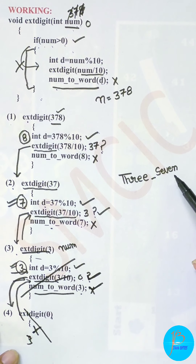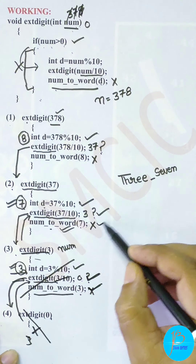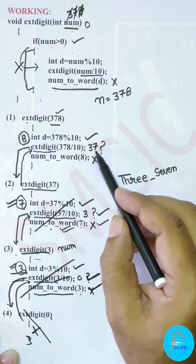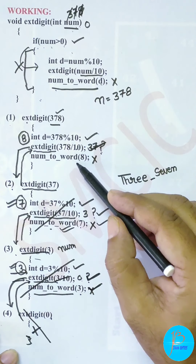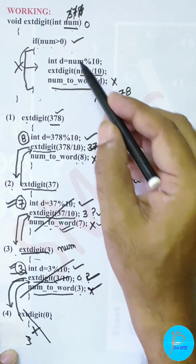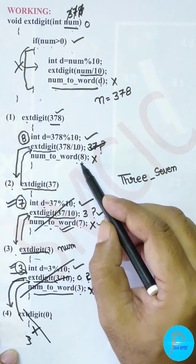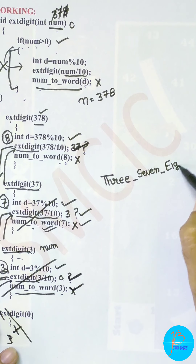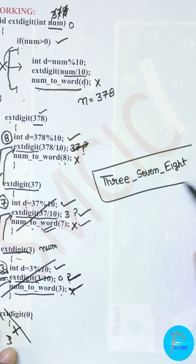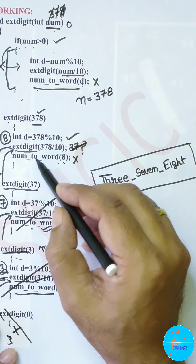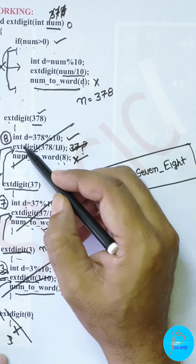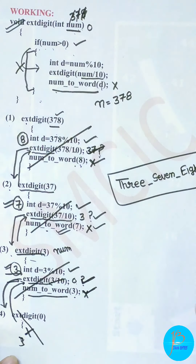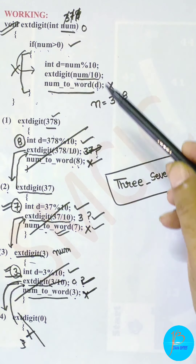When the second call ends, control goes to the first call's third line: numToWord(d) where d is 8. numToWord(8) prints wd[8] which is 'eight', so 8 is printed. So the answer 3, 7, 8 is printed in order. Then the first call also ends and control returns to wherever extDigit was called from originally.